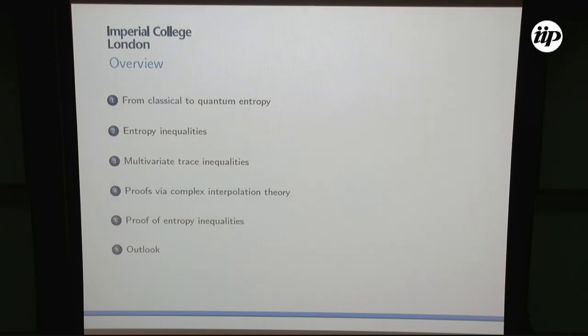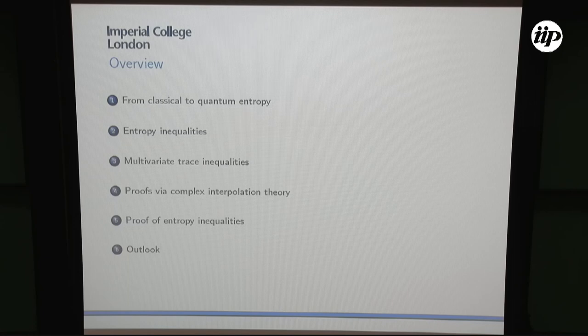I want to give a quick overview. I have 55 minutes, so we'll see how much of the proofs we'll do. I want to start from scratch and develop the concept of entropy from the classical commutative case. Then I want to talk about entropy inequalities, which will naturally lead us to the study of multivariate trace inequalities like the one by Lieb. Then we'll have the proofs and some outlook with open questions.